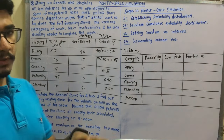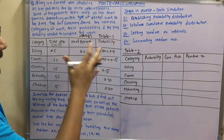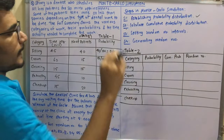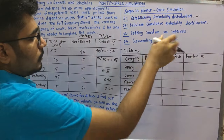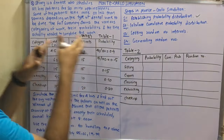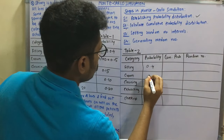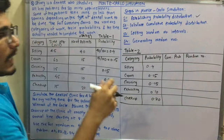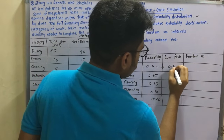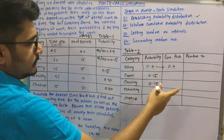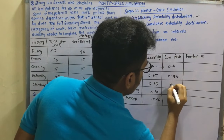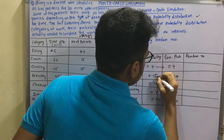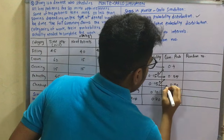In Monte Carlo simulation there are four steps. The first is establishing the probability distribution, which we have done. Next, we calculate the cumulative probability distribution. We create a second table with categories and probability values: 0.40, 0.15, 0.15, 0.10, and 0.20. The cumulative probability is calculated by adding sequentially: 0.40, 0.55, 0.70, 0.80, and finally 1.00. The cumulative probability always ends at 1.